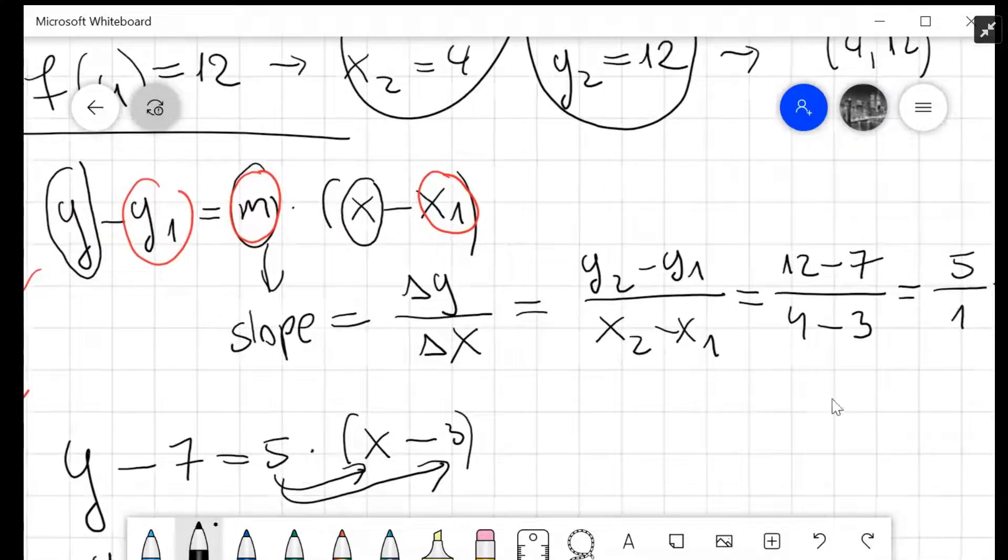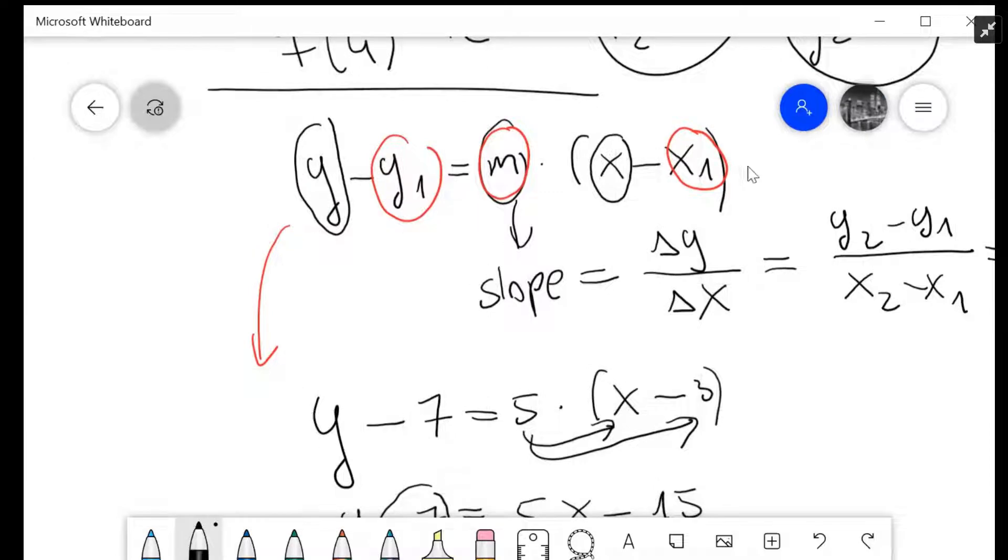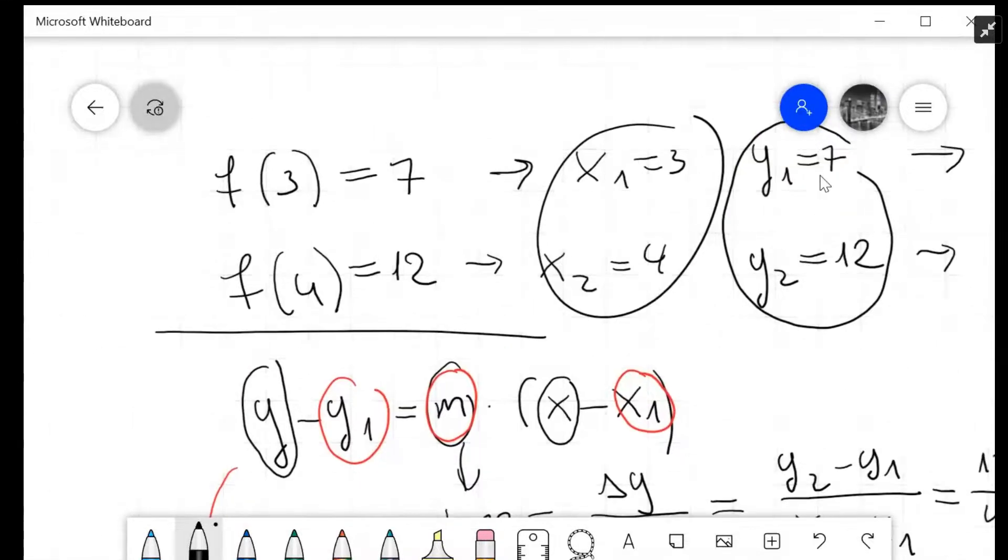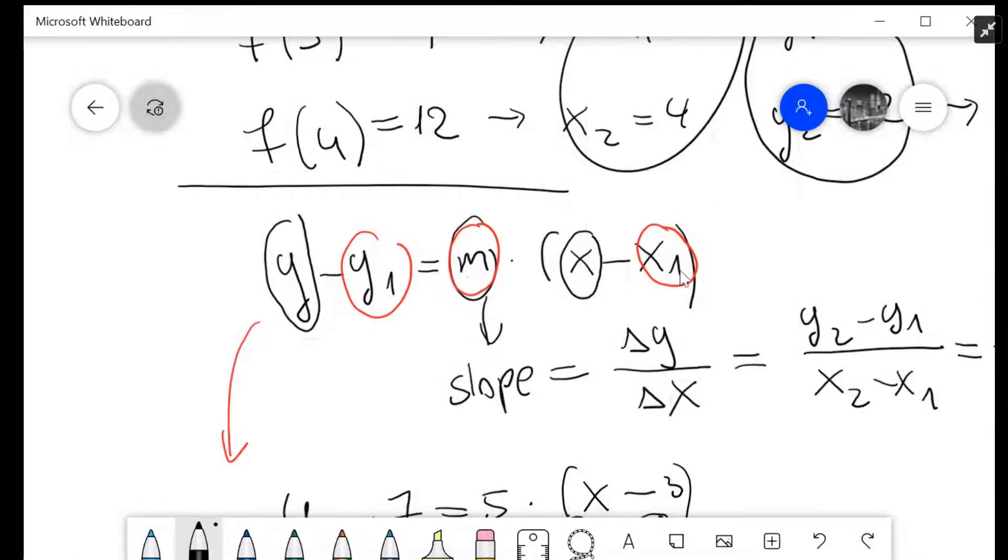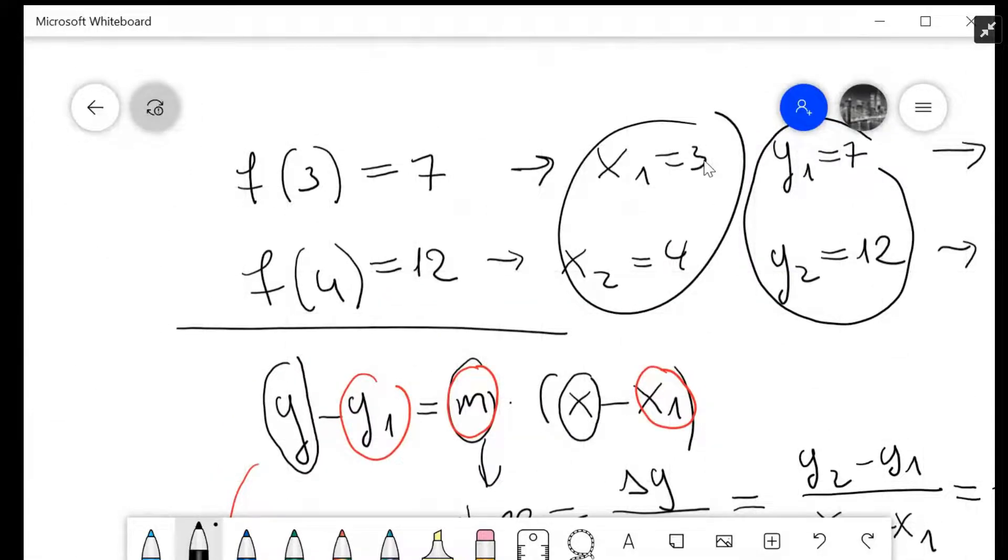Now that we have the slope, we'll put all the information into the point-slope form. y and x stay as variables. Instead of y₁, we insert 7; m is 5; and instead of x₁, we insert 3.